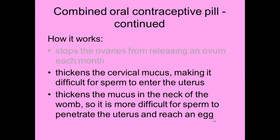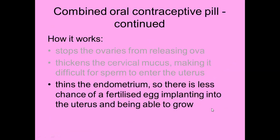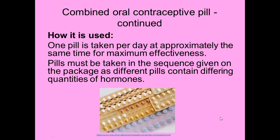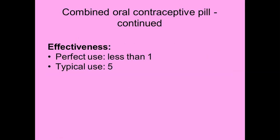The combined oral contraceptive pill is a combination of artificial estrogen and progesterone — artificial progesterone is called progestin or progestogen. They prevent pregnancy by stopping the ovaries from releasing an egg. They also thicken the cervical mucus, making it difficult for sperm to enter the uterus, and thin the endometrium so there's less chance of a fertilized egg implanting. It does this by keeping the body's hormone levels artificially constant. One pill is taken per day at approximately the same time for maximum effectiveness — it shouldn't be taken in the morning one day and evening the next. The packaging shows the date and day of the week with an arrow showing the sequence in which the pills must be taken, as different pills contain different quantities of the various hormones.